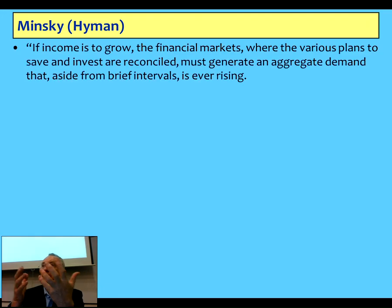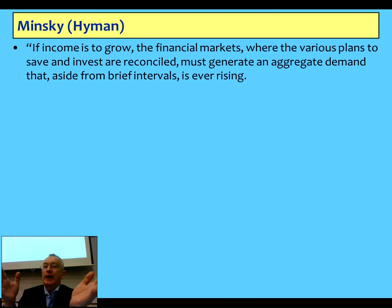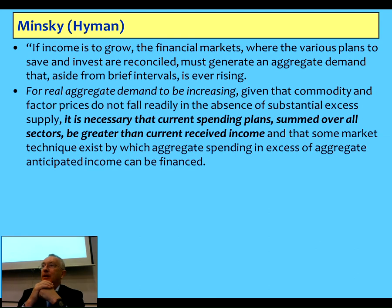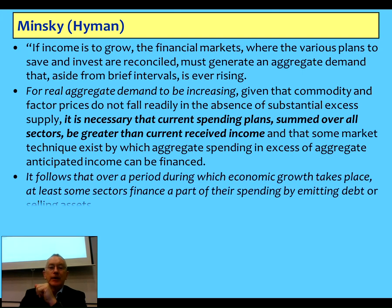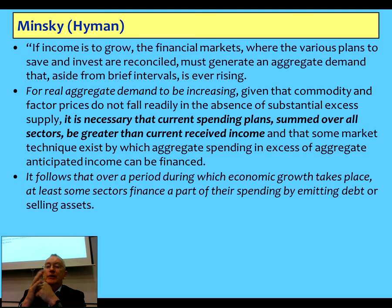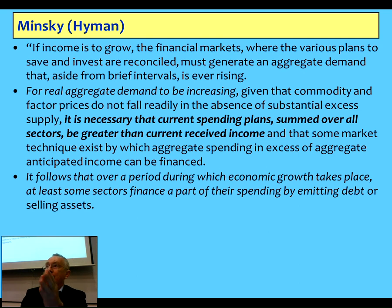Minsky, in a very early paper in 1963, said that if you're going to have growth, then the financial markets must be generating rising aggregate demand over time. For that to be happening, in the absence of falling prices, it's necessary that current spending be greater than current received income, and that you have some technique to reconcile that. There must be some way that spending is greater than income. It follows therefore that at least some sectors finance part of their spending by emitting debt or selling assets. Emitting debt means you've got to be financing part of your spending out of debt to have growing aggregate demand.